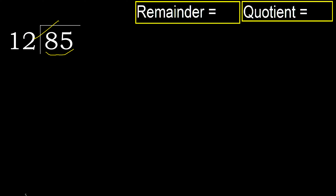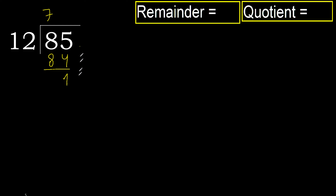12 multiplied by which number is nearest to 85 but not greater? 12 multiplied by 9 is greater. 12 multiplied by 8 is greater. 12 multiplied by 7 is 84, which is not greater. So 85 minus 84 is 1.